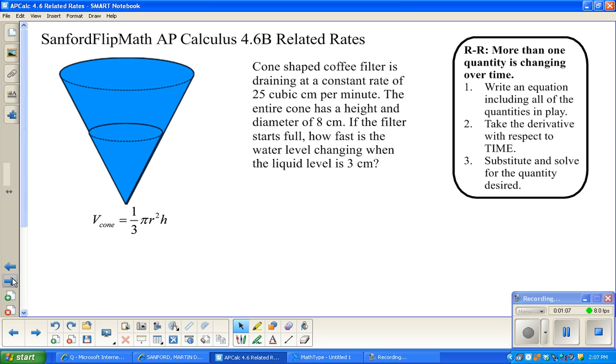So with that in mind, let us proceed on to our new example. This is about a cone. We have a coffee filter that's draining at a constant rate of 25 cubic centimeters per minute. The entire cone has a height and diameter that are the same, and then the filter starts full. How fast is the water level changing? We're given that at a specific time. Just a reminder that they're talking about the liquid level being 3 centimeters. Remember, this is a height measurement, and height is changing, so don't substitute this now.